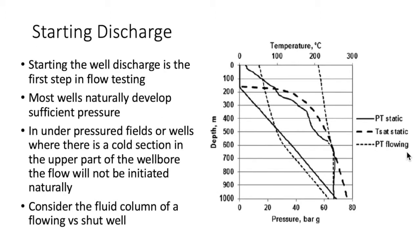The first step in flow testing is to initiate well discharge. This is not usually difficult because most geothermal wells naturally develop sufficient pressure to begin discharge as soon as the well surface is drilled and the wellhead is opened. However, some wells do not have enough pressure, or have cold water at the top of the water column that prevents boiling and sufficient pressure buildup. If a well does not spontaneously discharge after drilling, the fluid will have to be boiled or cool water replaced with hot water to initiate discharge.